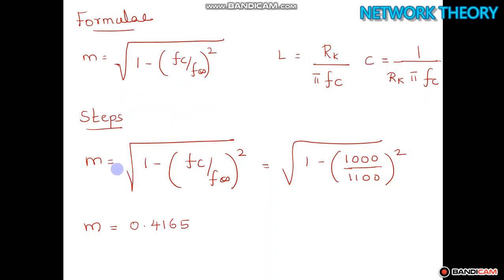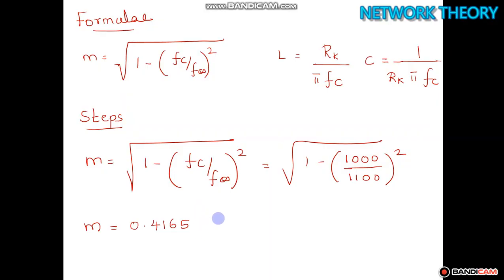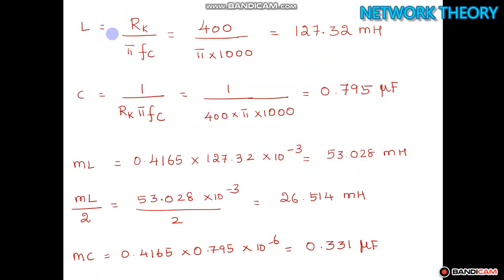Substituting fc = 1000 Hz and f∞ = 1100 Hz to find m: m = √(1 - (1000/1100)²). Using a calculator, m = 0.4165. It is important to keep at least four decimal places, as rounding too early will cause significant variation in the final answers.